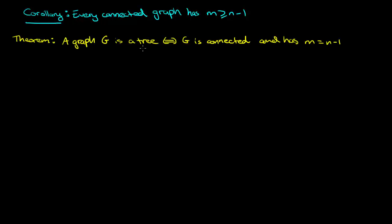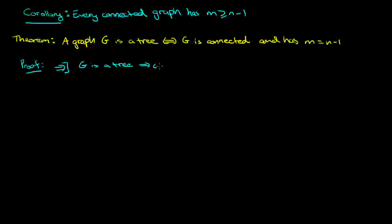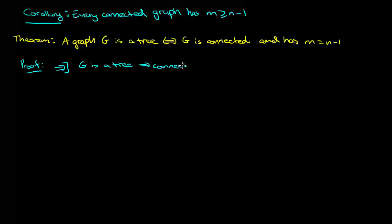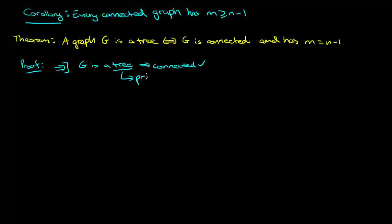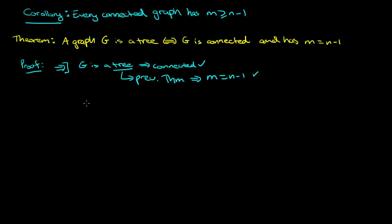This is the theorem I promised. A graph G is a tree if and only if it's connected and has number of edges equal to N minus 1, where N is the number of vertices. For the first direction: if G is a tree, we already know it's connected and acyclic. And from our previous theorem, a tree being acyclic already tells us that M is equal to N minus 1. So this direction is very easy.